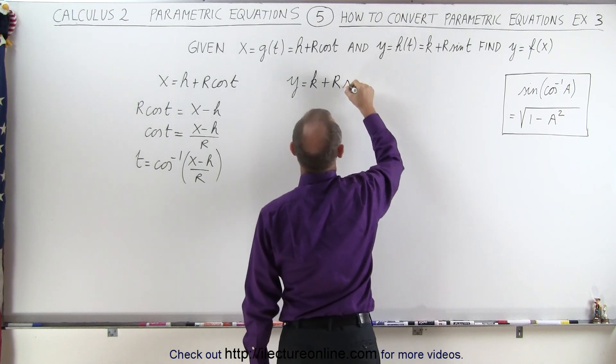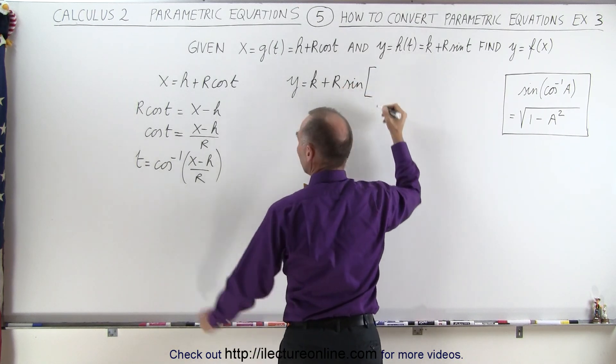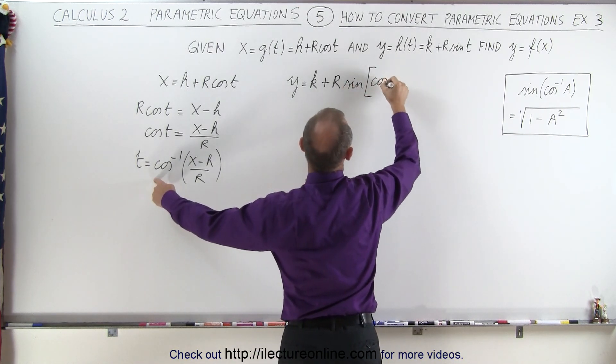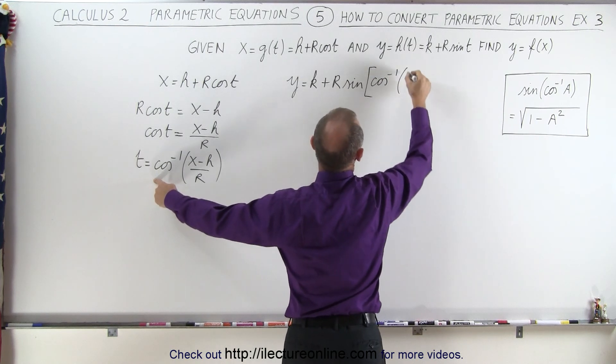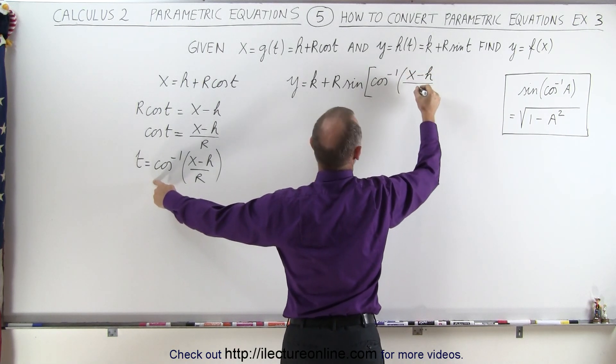Instead of the sine of T, we're going to write the sine of the inverse cosine of the quantity X minus H divided by R.